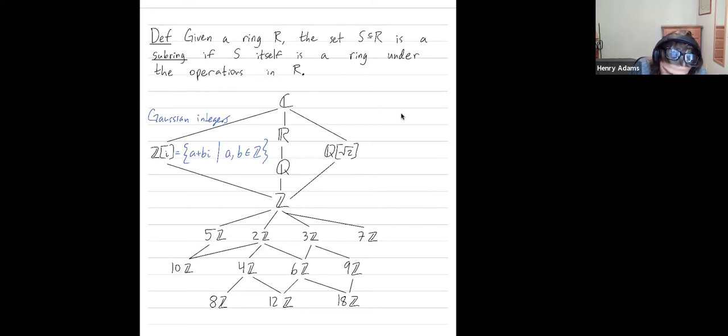I think I actually meant to draw this inclusion here from the rationals going up to this ring that contains the rationals. So q, this is how you say this ring in English is q adjoin the square root of 2. It's equal to all things of the form a plus b times the square root of 2 such that a and b are rationals.